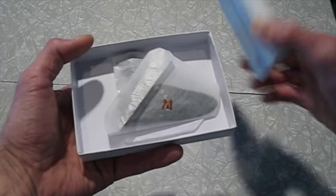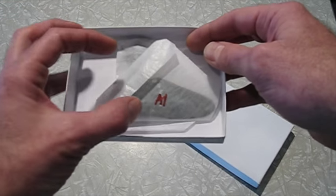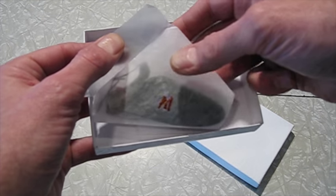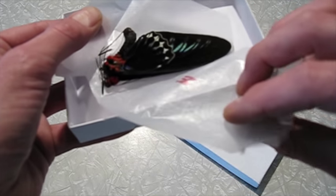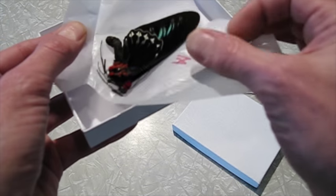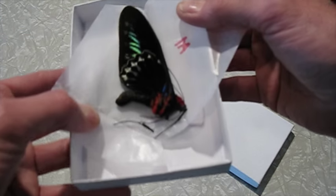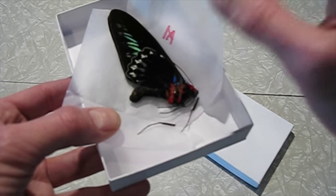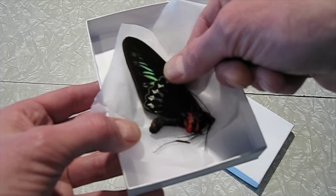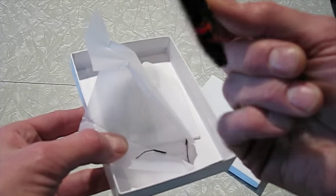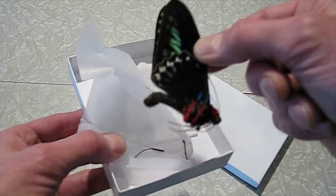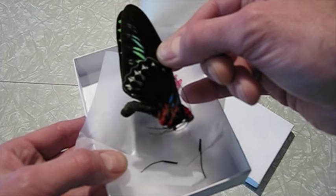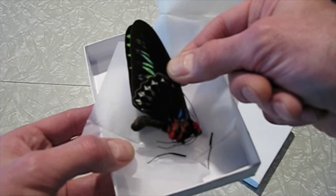In this video I'm going to demonstrate how to relax and pin dried butterflies. I'm going to use this pair of Raja Brooke's birdwings, Trogonoptera. These are from the Indo-Australian region. They're protected, all the birdwings are protected, but they're raised on farms so it's actually a good thing.